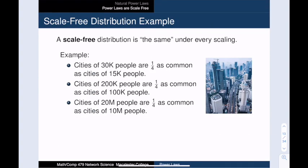We will take a step back and talk about scale-free distributions rather than scale-free networks. Now loosely speaking, a scale-free distribution is one that looks the same under every scaling. And here's an example using city populations. Suppose that we know that cities containing 30,000 people are one-fourth as common as cities with 15,000 people. In a scale-free distribution, this would mean that cities of size 200,000 must be one-quarter as likely as cities of size 100,000. And that cities with 20,000,000 people must be one-quarter as likely as cities with 10,000,000 people.